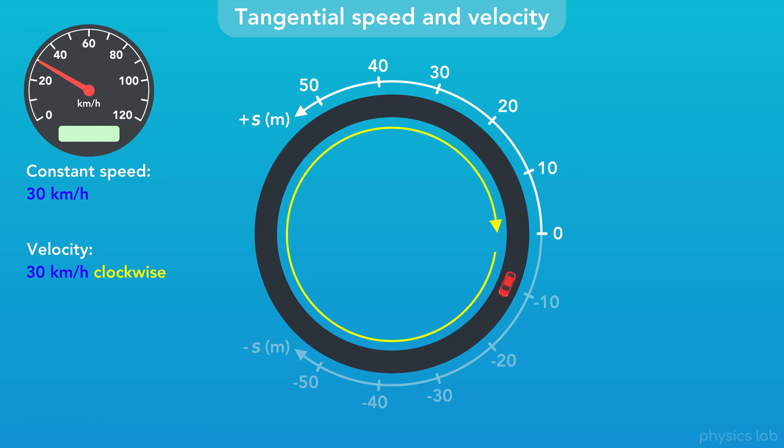Conventionally, clockwise is the negative direction, so based on this axis, the velocity of the car would be negative 30 kilometers per hour. If the car was driving counterclockwise, then we would say the velocity is positive 30 kilometers per hour.